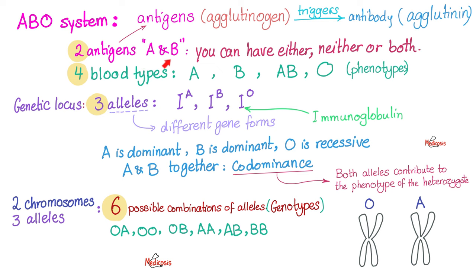Can you have A alone? Yes. B alone? Yes. Can you have both? Yes — we call you AB. Can you have neither? Yes — we call you O because it's zero. Therefore, you can only have four ABO blood group types: A, B, AB, or O. Just four types from two antigens.